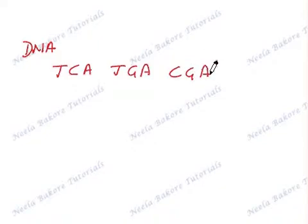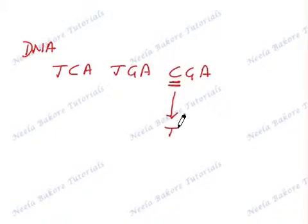Suppose this C undergoes a point mutation and it is replaced by a T. So now the codon, instead of CGA, will be read as TGA.